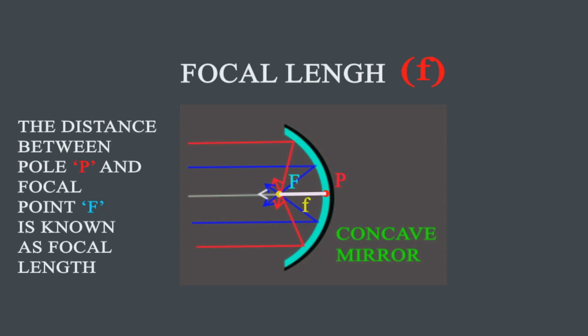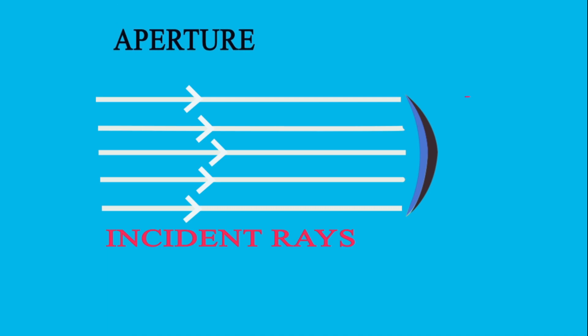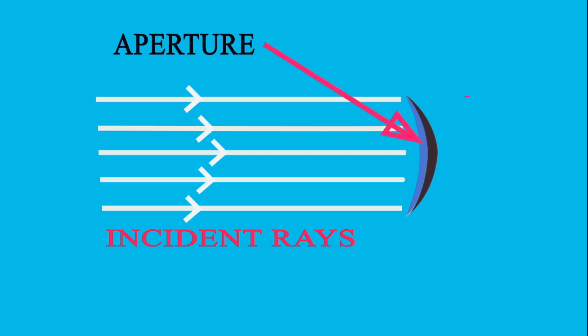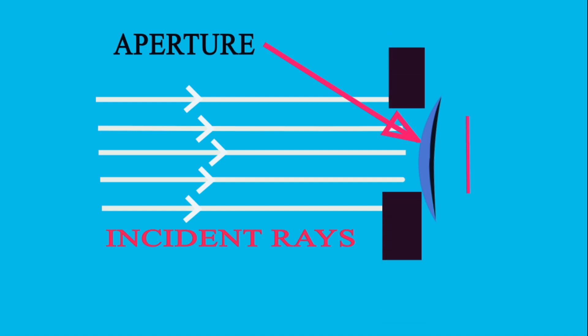Now, aperture. When incident rays fall on the convex mirror, the area where the incident rays fall is known as the aperture. It is basically the height of the convex mirror. The same applies for the concave mirror — the height of the concave or convex mirror is known as the aperture. If we block the light, the area of the spherical mirror will reduce, the height will reduce, and the aperture will reduce.